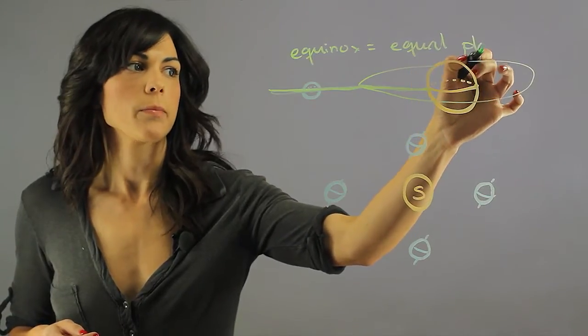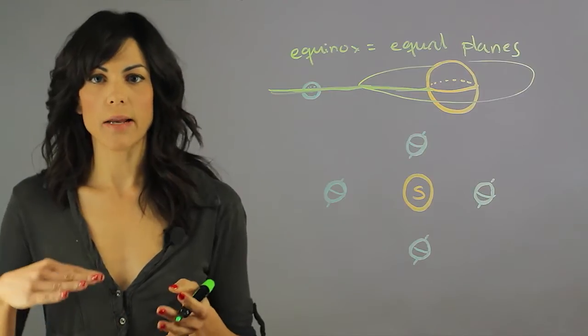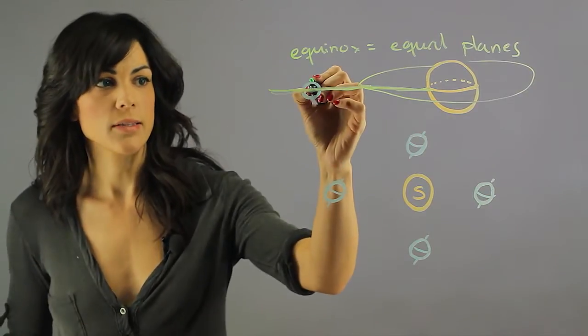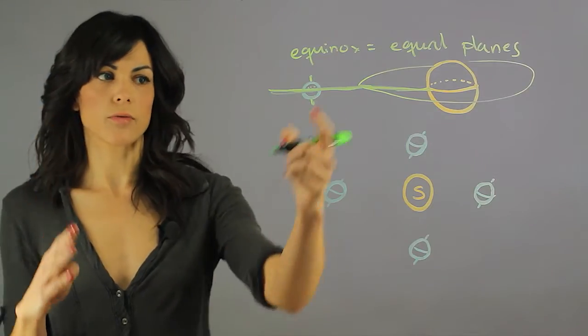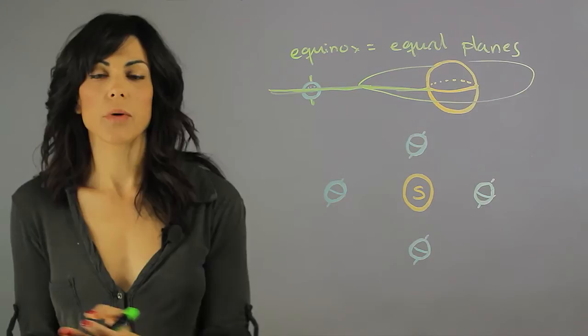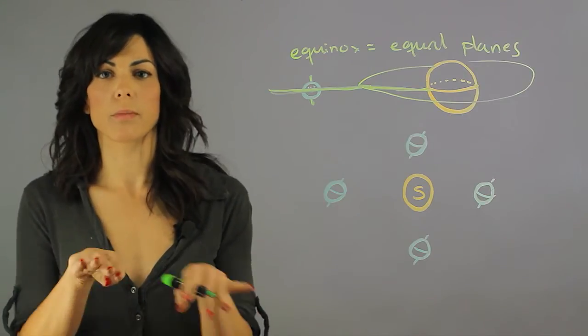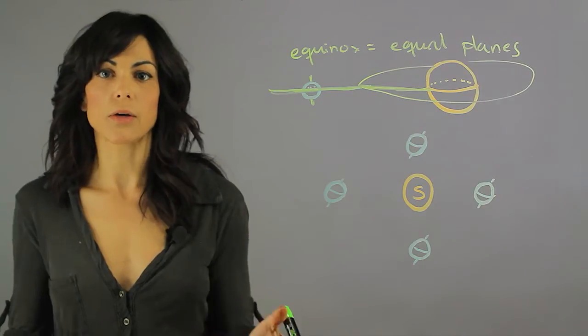Now, what planets have this? So if you don't have any inclination, meaning if your North Pole and South Pole are 90 degrees from your orbital plane, then you have no inclination to the orbit. Therefore, your planes are always equal, so your entire year is an equinox.